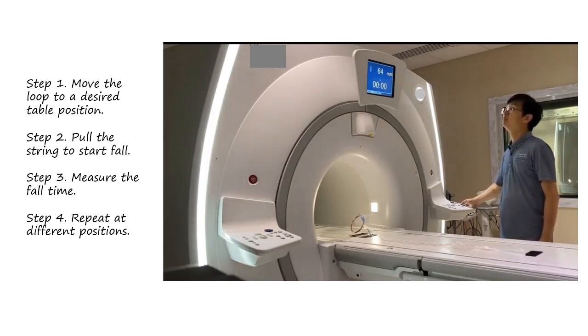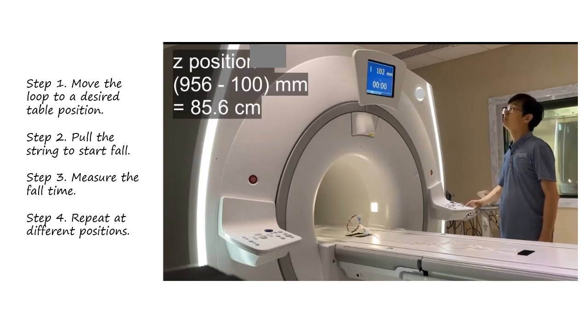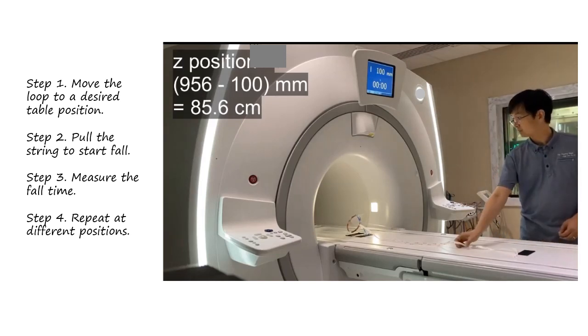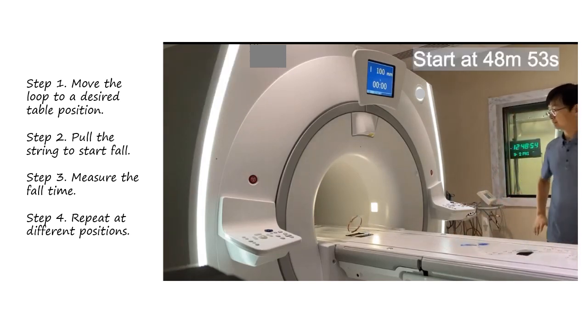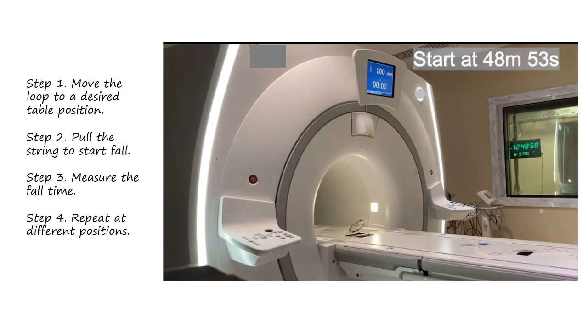This is how we did it. First, we moved the loop to a desired table position. Then we pulled the string to start the fall. We measured the fall time, and repeated this at different table positions.